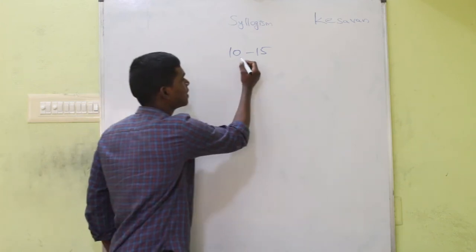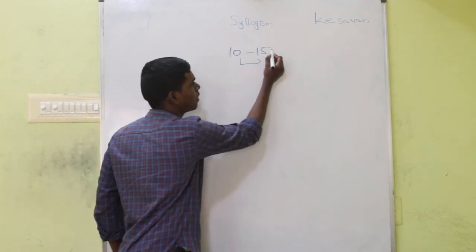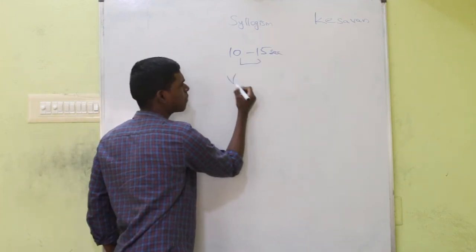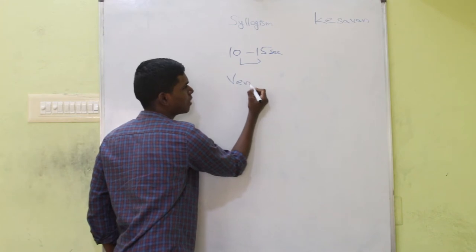For 10 to 15 seconds, it's more than enough to solve a syllogism question.